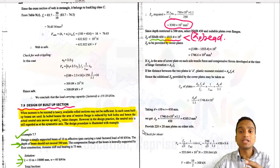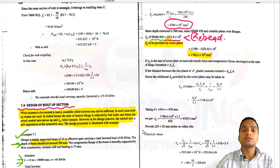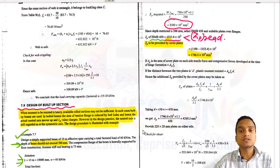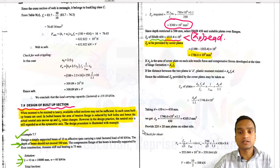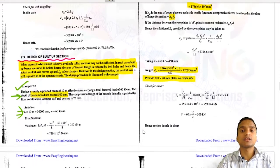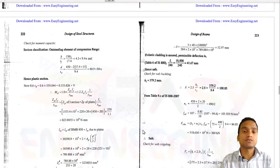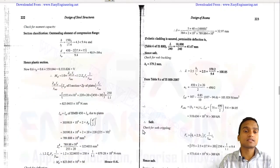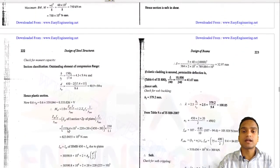To meet the remaining Z_p requirement, cover plates are used. The remaining Z_p is calculated by the difference of the two values, and using the formula A_p × f_y we calculate the cross-sectional area of the two cover plates. We provide 220 × 20 mm plates on either side of the ISMB 450. Then we check for shear, classify the section, and check for low shear or high shear, bending moment, and deflection.